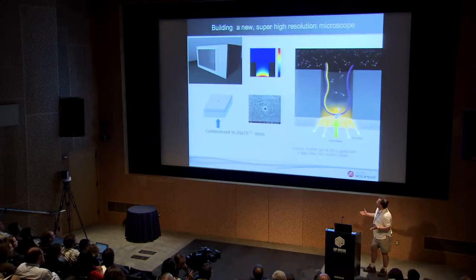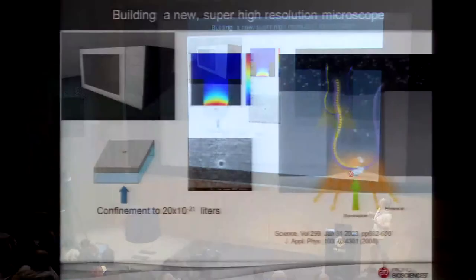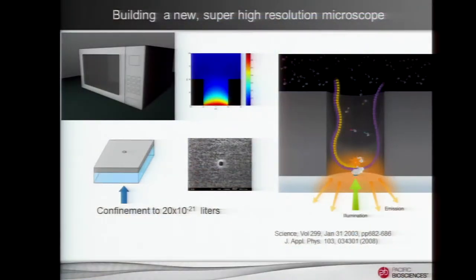That type of technology is very cool, based on zero-mode waveguide transmission below cutoff. The idea is you're isolating a single molecule of DNA polymerase in a tiny hole — a zero-mode waveguide. When you bounce a laser on the underside, it only illuminates the very bottom of that hole because the laser light is too big to fit through the waveguide. You get a confinement volume of 10⁻²¹ liters, so you can ignore everything else and just see what's going on in that tiny hole.